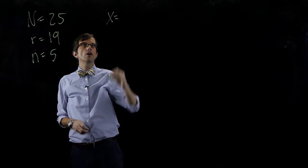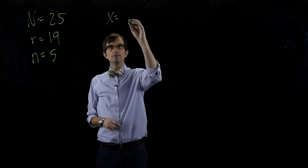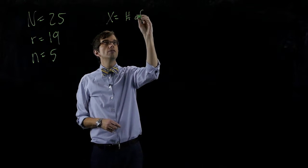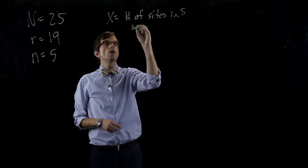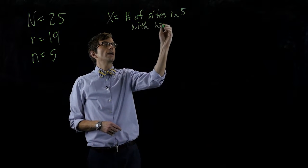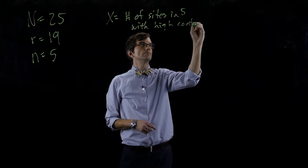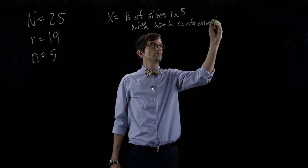So we're going to name a random variable, let's just call it X. And that is the number of sites in five with high contamination.